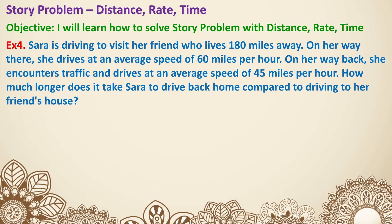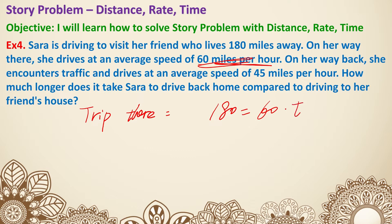Example four: Sarah is driving to visit her friend who lives 180 miles away. On her way there, she drives at an average speed of 60 miles per hour. On her way back, she encounters traffic and drives at 45 miles per hour. How much longer does it take Sarah to drive back compared to driving there? For the trip there: 180 equals 60 times T, so dividing by 60 gives the trip there as 3 hours.